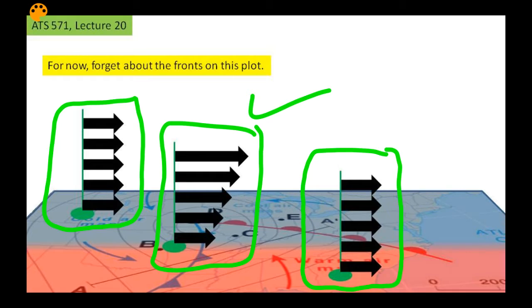If those black arrows were geostrophic winds, see how those geostrophic winds are changing with respect to height. The textbook comes out guns blazing and says that can only happen in the presence of a temperature gradient. We're going to figure out exactly why that would be.